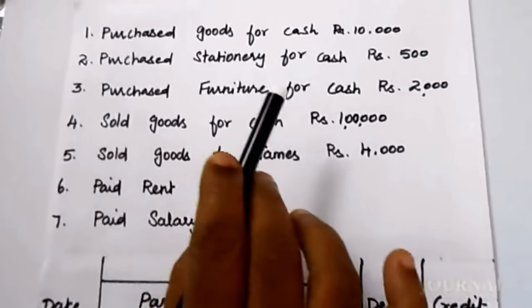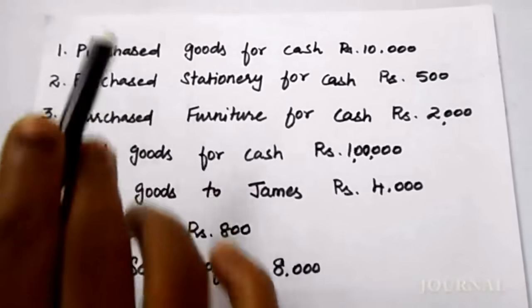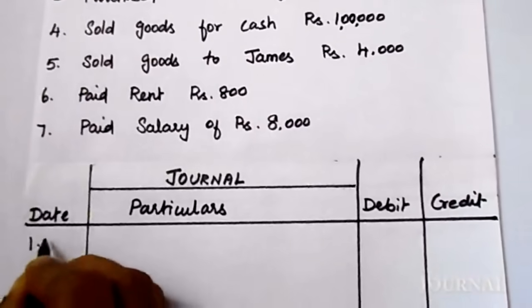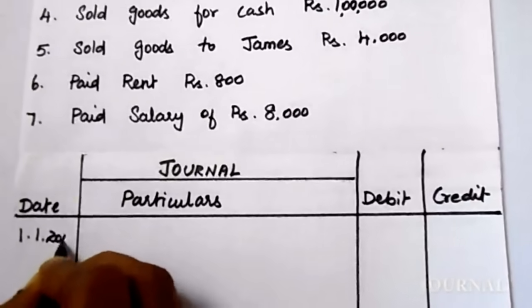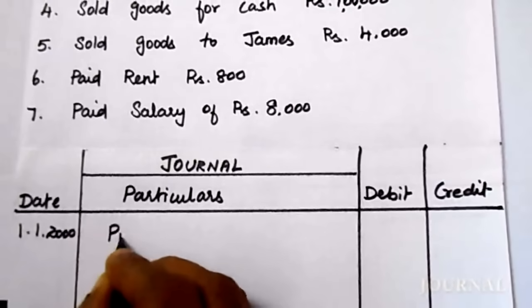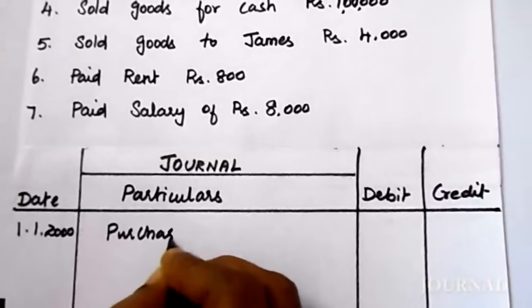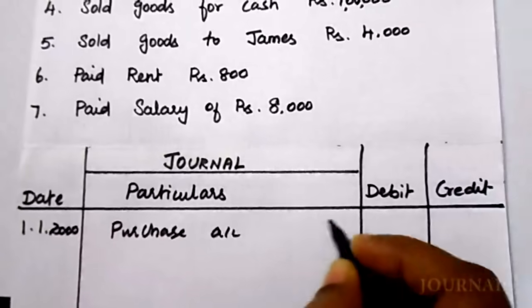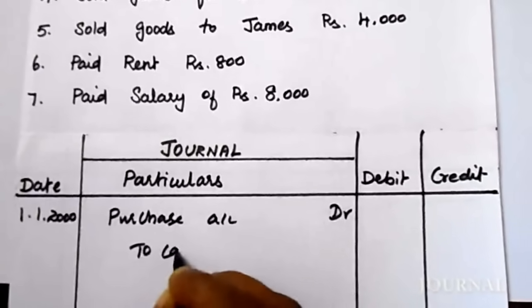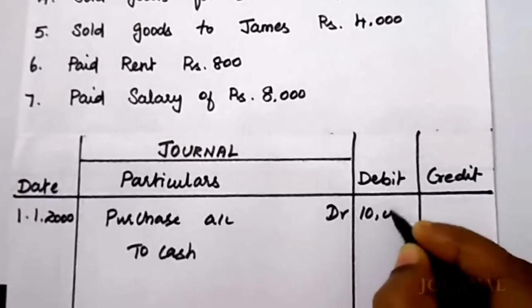For the first transaction, the entry is purchase account debit to cash. On 1st January 2000, purchased goods. Purchase account debit to cash — 10,000 rupees.